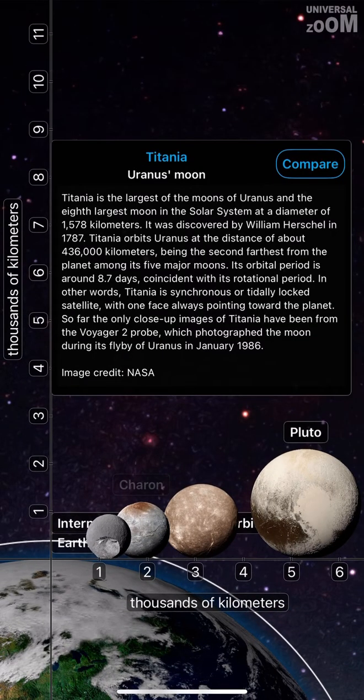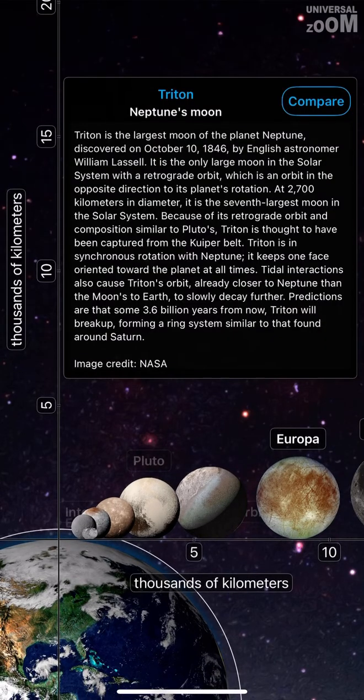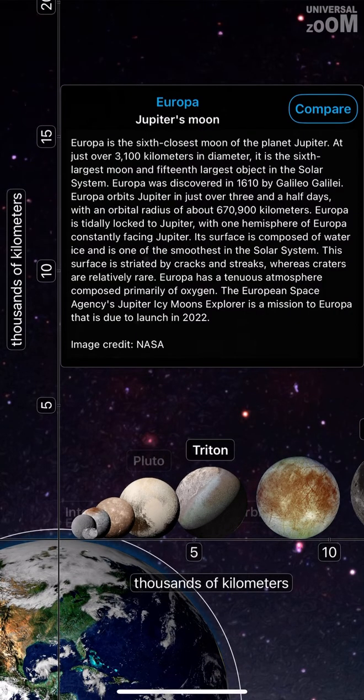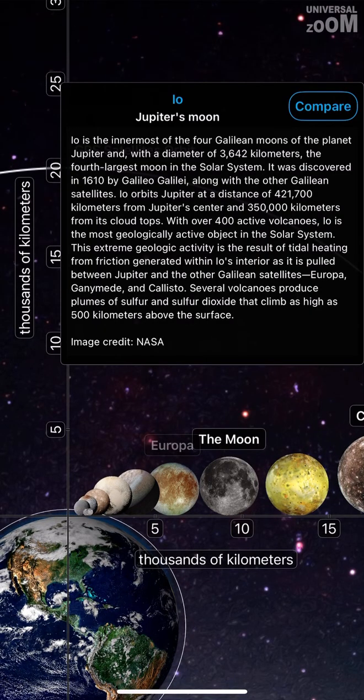Titania, Uranus moon. Pluto, a dwarf planet in the Kuiper belt. Triton, Neptune's moon. Europa, Jupiter's moon. The moon, the natural satellite of the Earth. Io, Jupiter's moon.